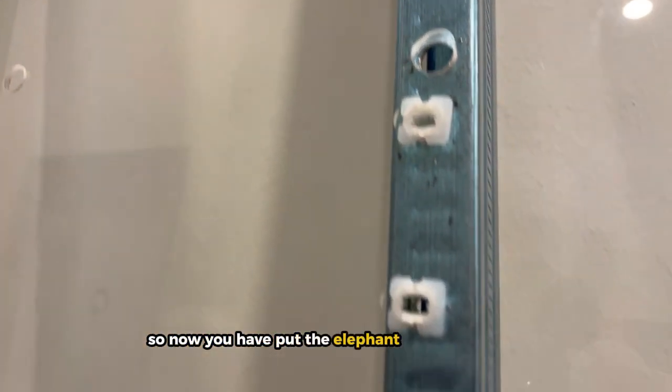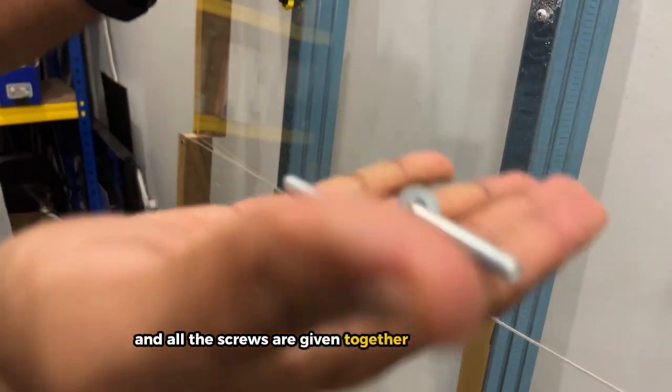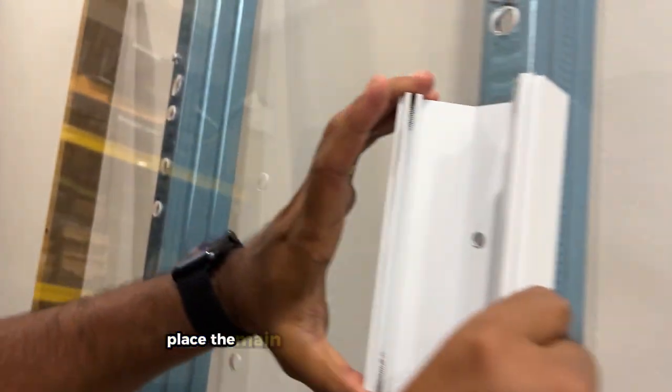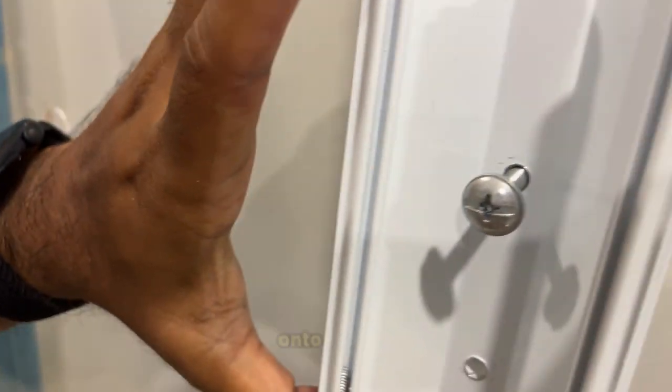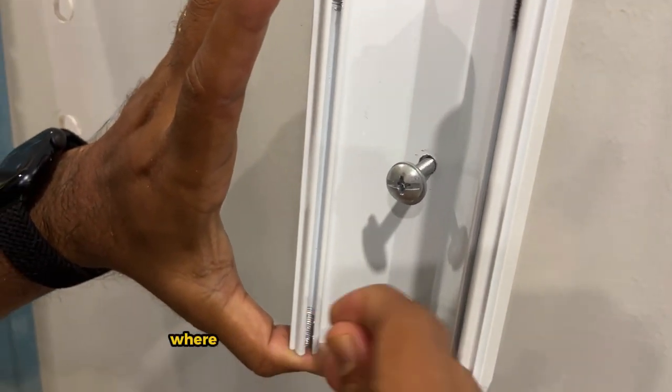So now you have both the elephant anchors placed. Take this and all the screws are given together with the product. Place the main wall unit and place the screws onto the holes where you have placed the elephant anchors.